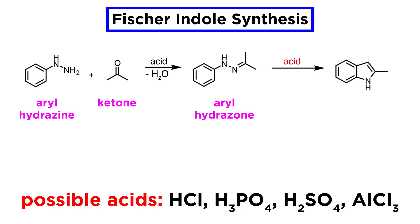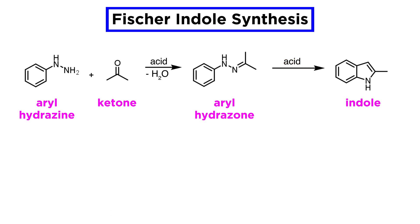These hydrazones can be treated with strong Brønsted-Lowry acids like hydrochloric, phosphoric, or sulfuric acid, and even Lewis acids like aluminum trichloride, to yield indoles.